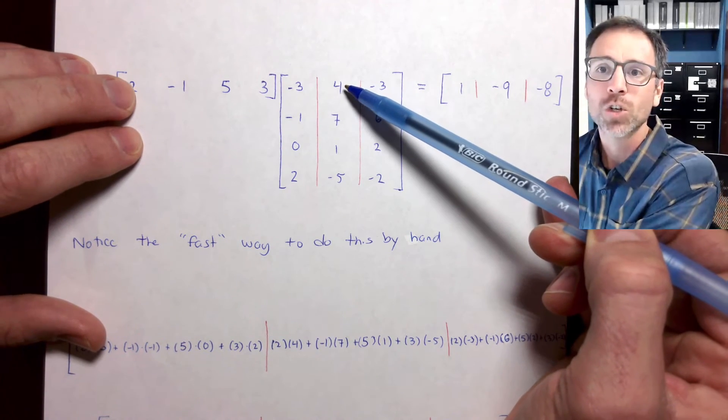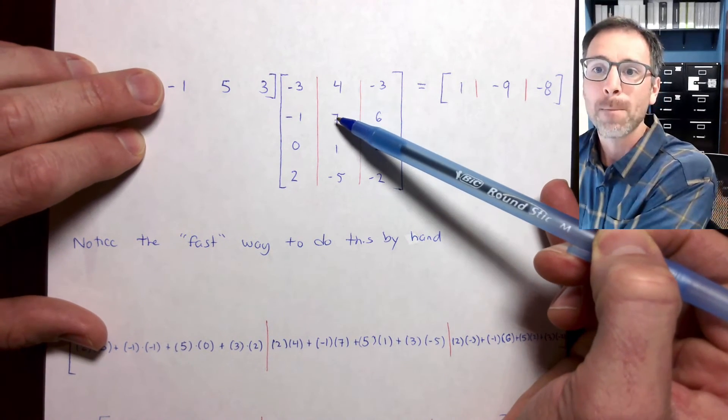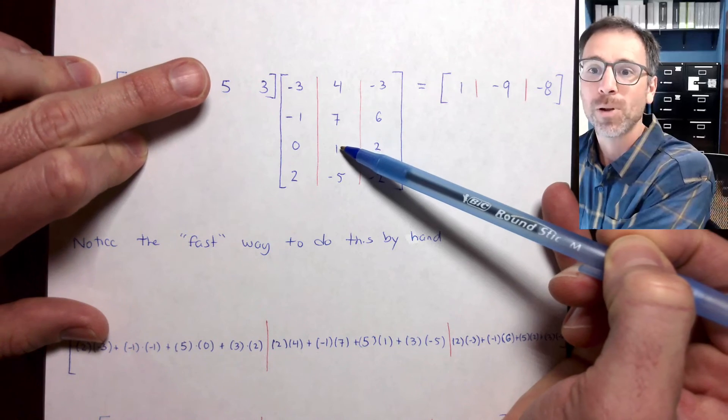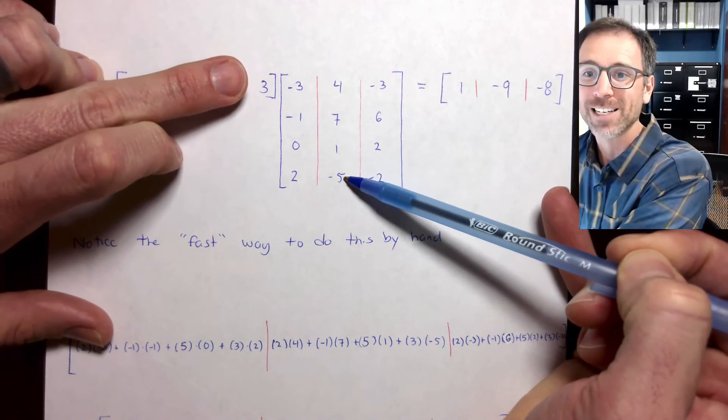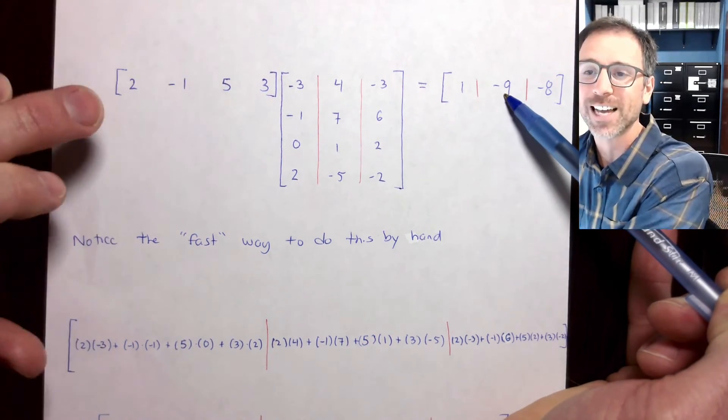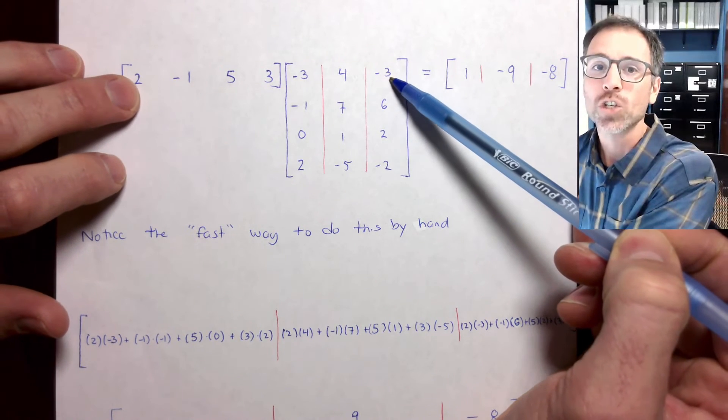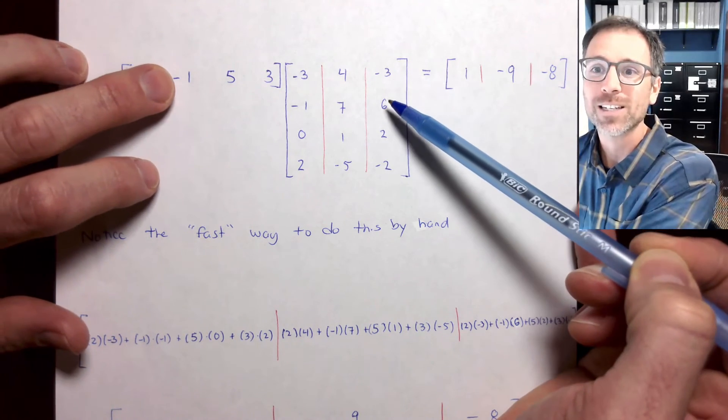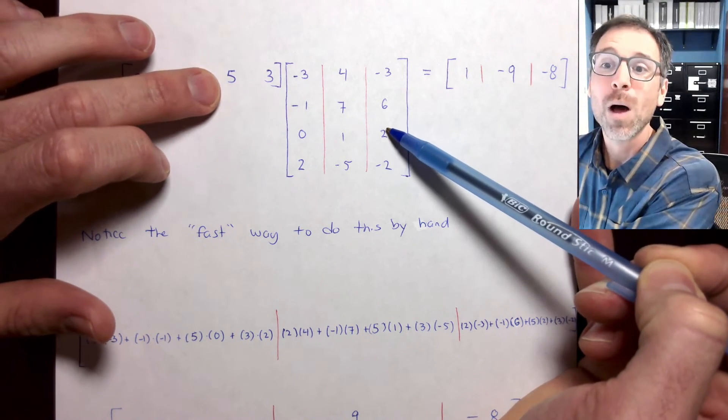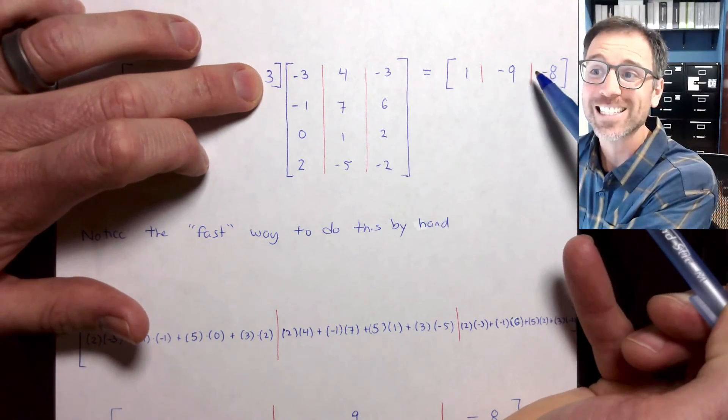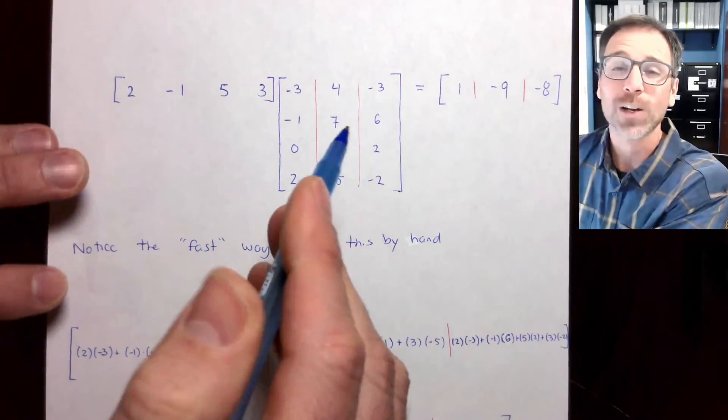So now we'll go down to the second one. 2 times 4 is 8, minus 7 is 1, plus 5 is 6, minus 15 is negative 9, that's exactly what I got. And then here, 2 times negative 3 is negative 6, minus 6 is negative 12, plus 10 is negative 2, minus 6 is negative 8. So I've done a quick calculation.